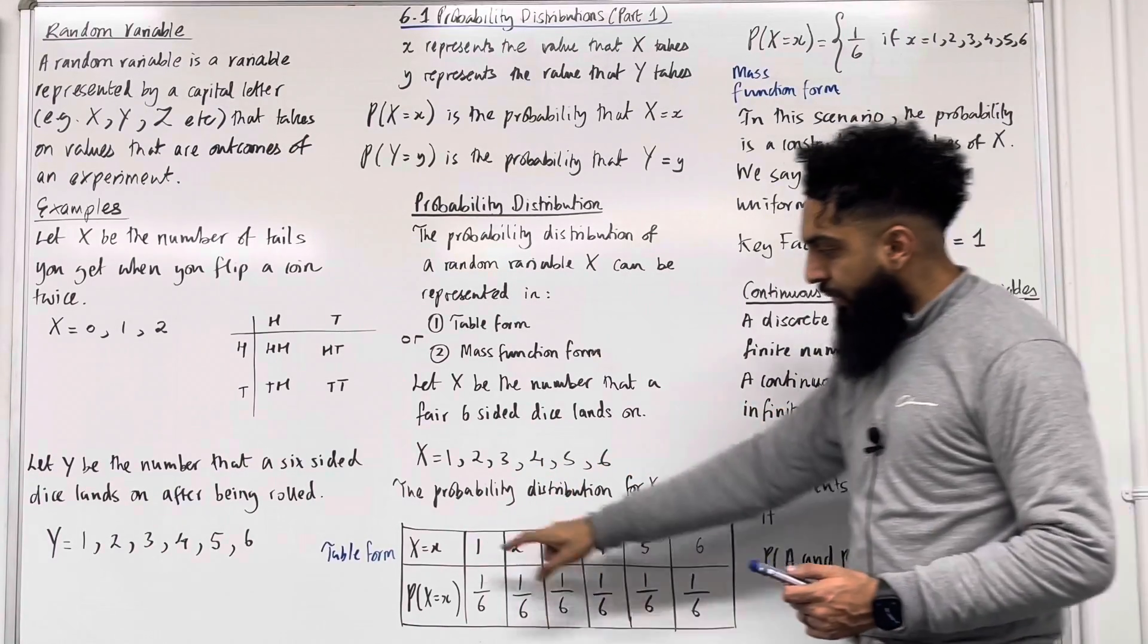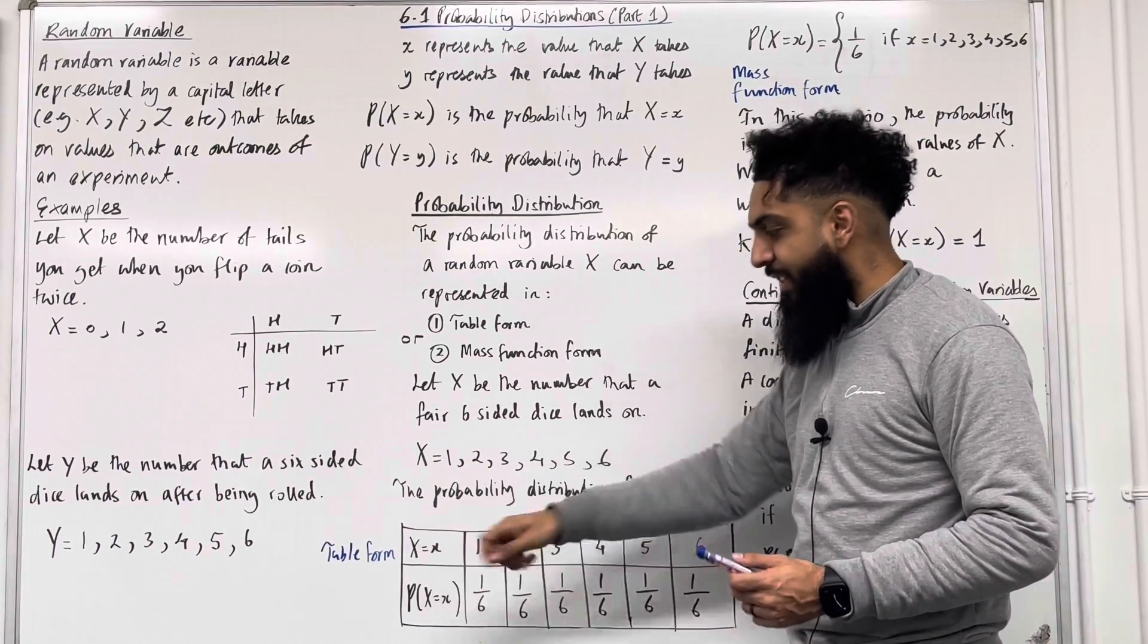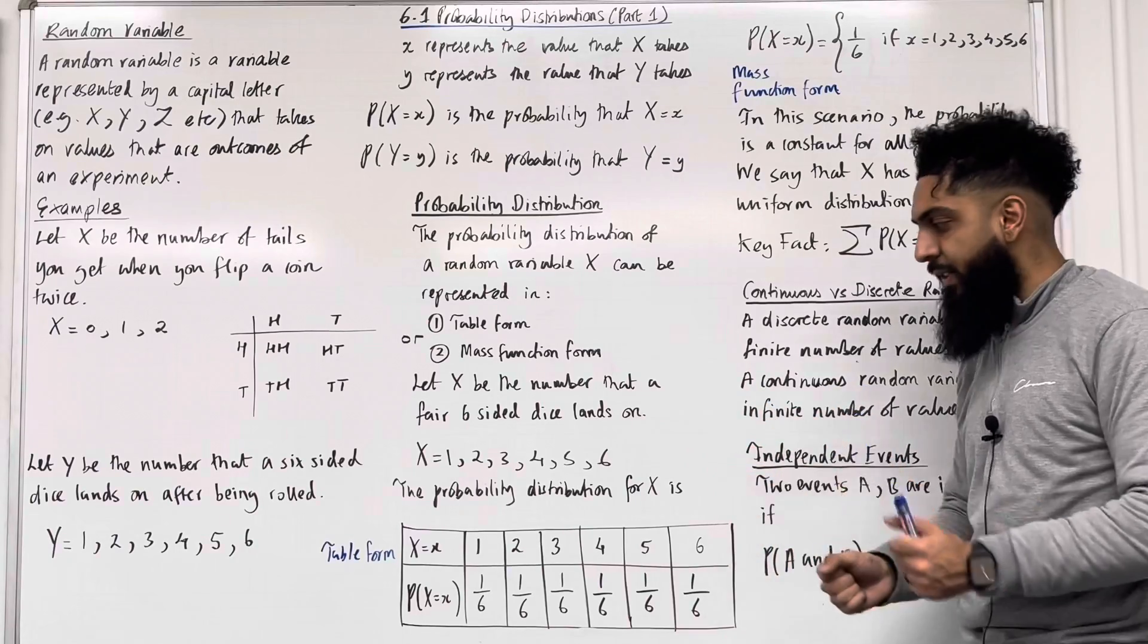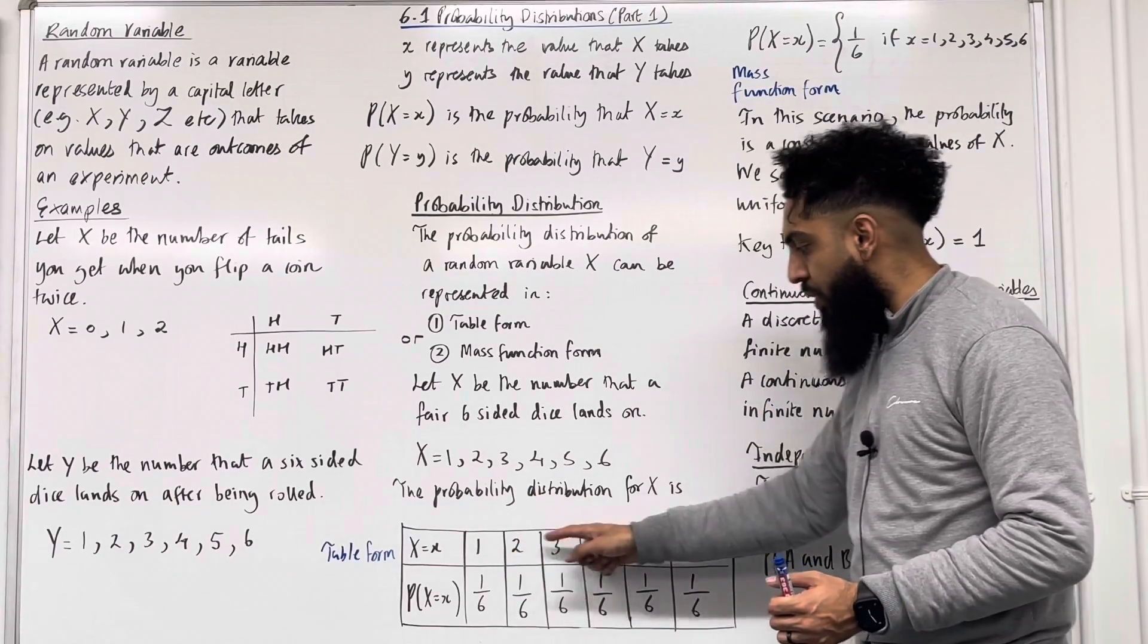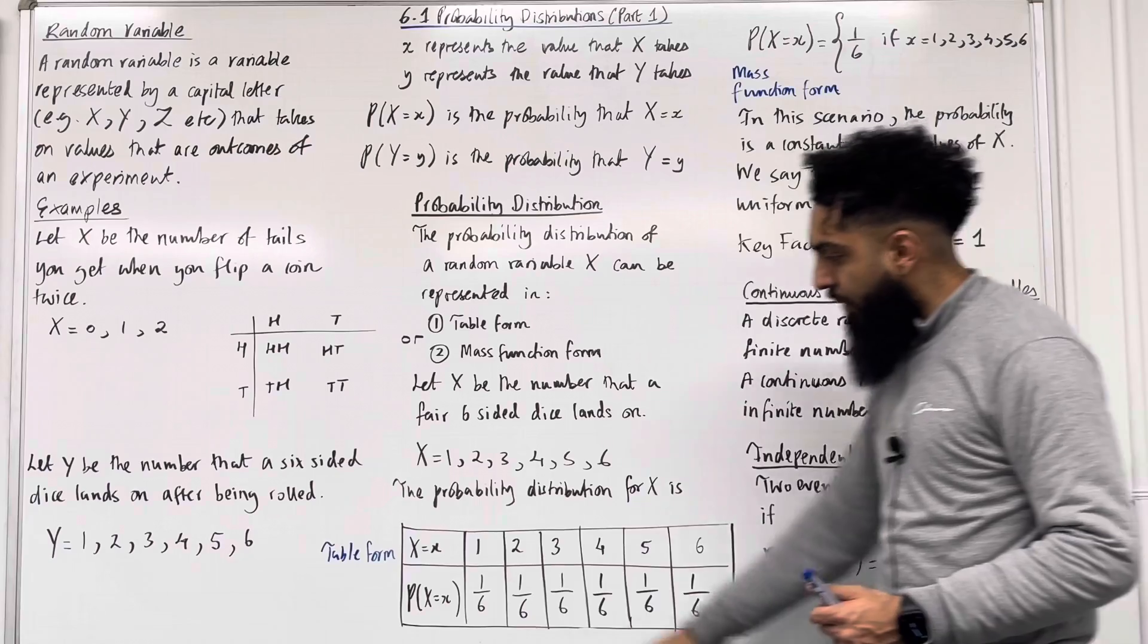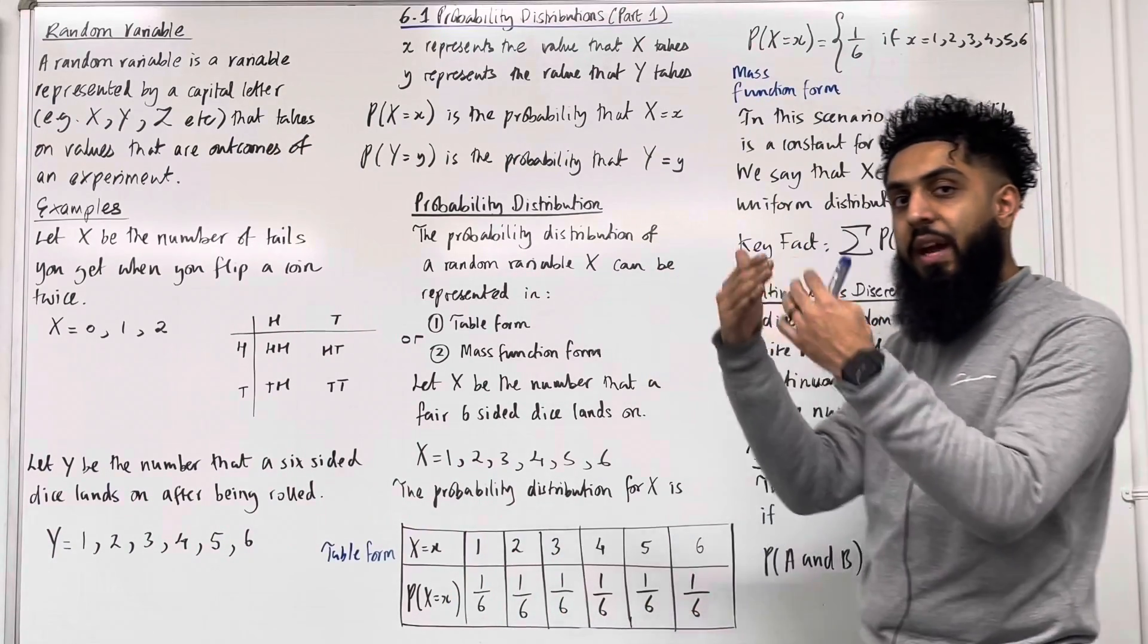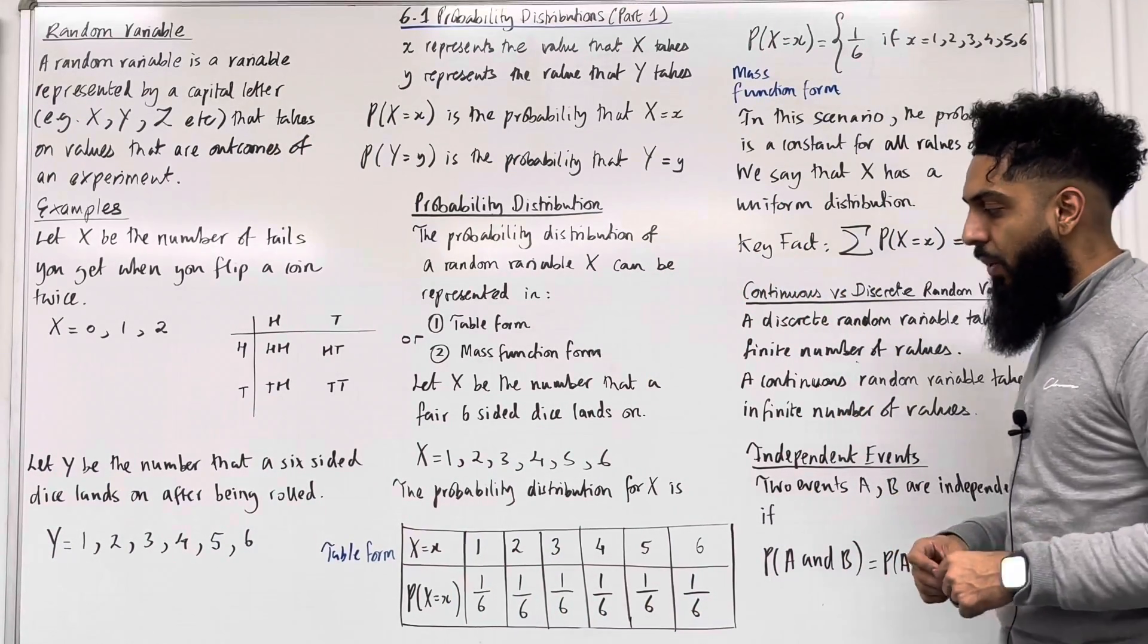There are two rows. The first row represents capital X taking on the value lowercase x, where lowercase x is 1, 2, 3, 4, 5, or 6 in this scenario. And the second row represents the probability that capital X takes on the value lowercase x.